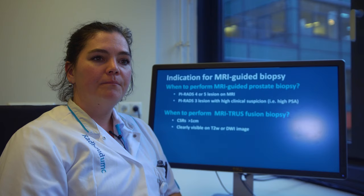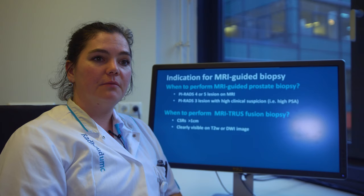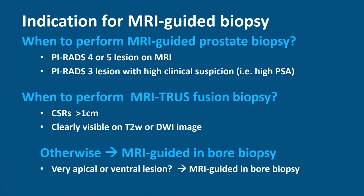Now it is clear when to perform MRI-guided biopsy. We also need to define when to perform MRI fusion biopsy. When cancer suspicious regions larger than 1 cm are detected and clearly visible on T2-weighted images or on diffusion-weighted imaging, MRI fusion biopsy is the preferred technique. If cancer suspicious regions smaller than 1 cm are detected, MRI-guided in-bore biopsy should be performed. Also, when the lesion is located very apical or ventral in the prostate, MRI-guided in-bore biopsy is preferred over MRI fusion biopsy.